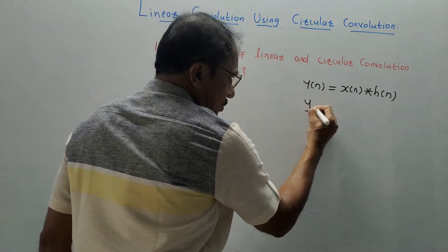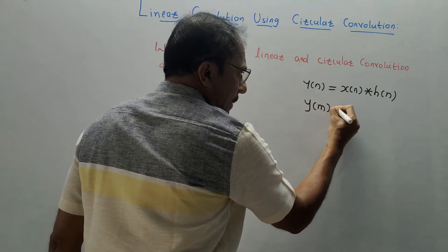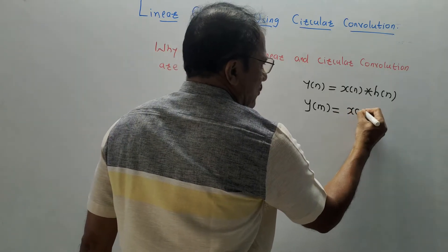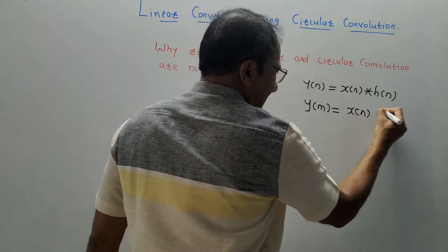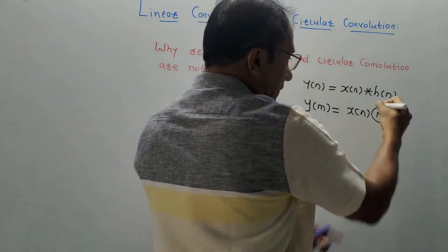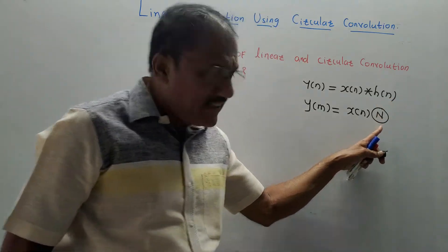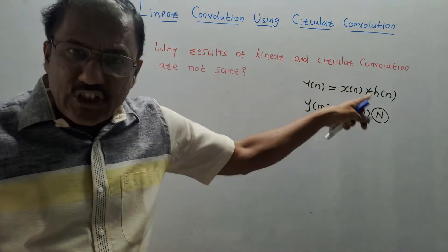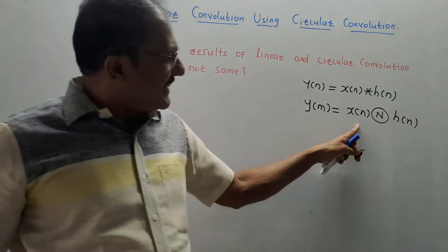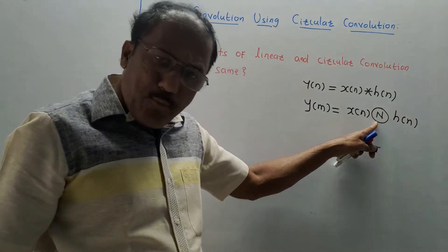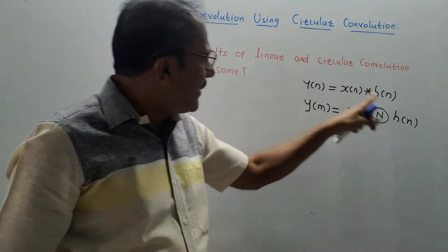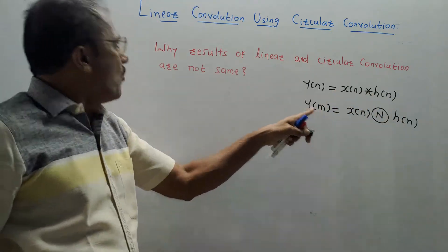Circular convolution is denoted by y(n), expressed as x(n) with a circle containing N written inside it, representing N-point circular convolution. So, N-point circular convolution of x(n) and h(n) gives y(n).